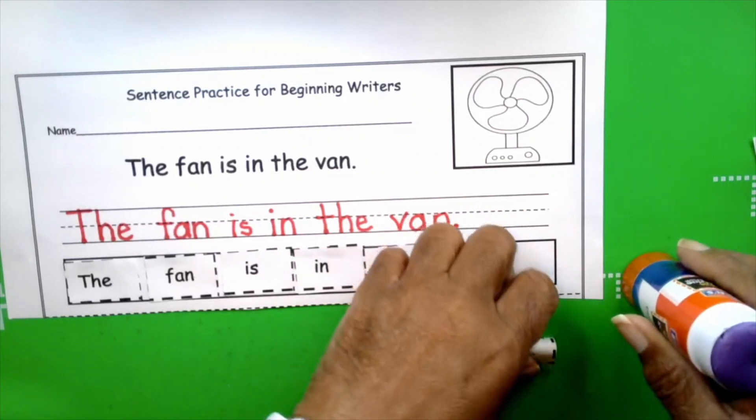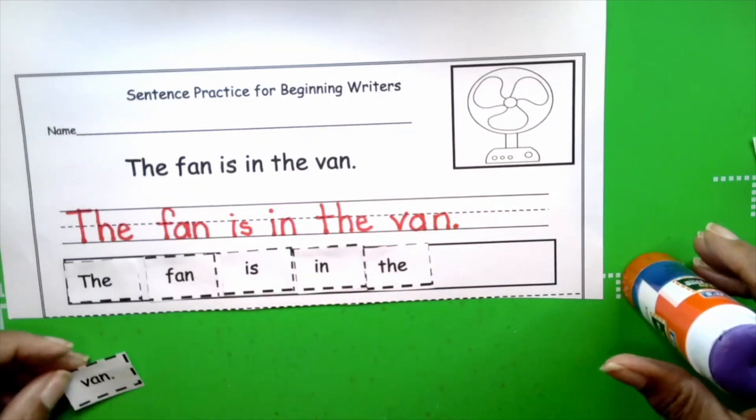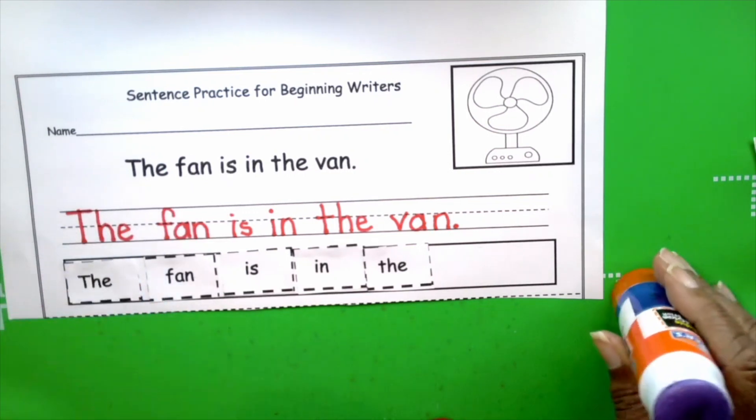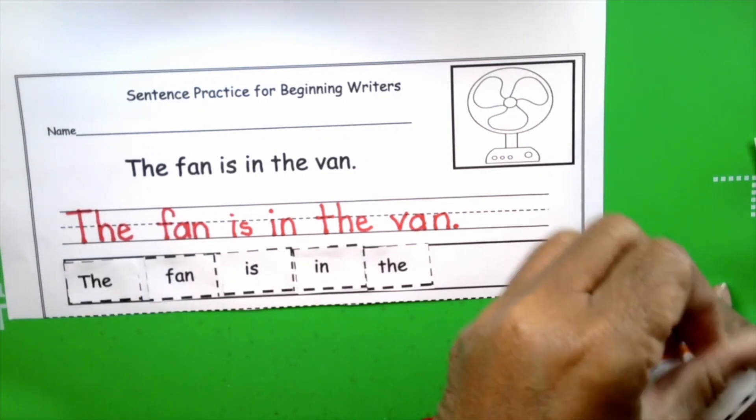And where is it? It's in the van. And how do we know that this is the last word that we're going to use? It has a period. You're absolutely right. Good for you. The last word, after the last word, we have our period. Period tells us, this is the end of the sentence. Stop.